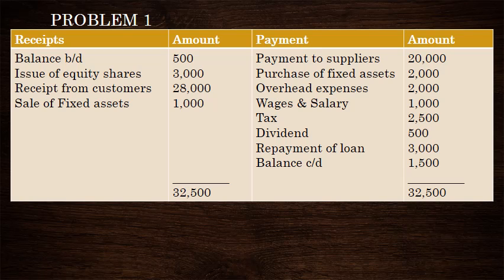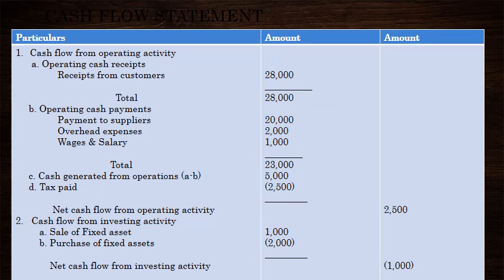The answer is to get the problem. The first column provides the first column, and the next column gives the cash flow from operating activities. We will see the details and the format. The main items are the operating cash receipts and operating cash payments. We will see the cash generated from operations, and then the cash flow from operating activity.